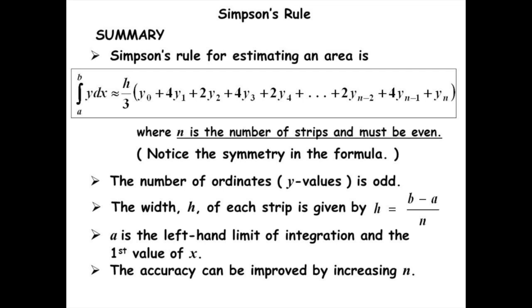Simpson's rule states that sum of first and last ordinates has to be done. Add twice the sum of remaining odd ordinates and four times the sum of remaining even ordinates, multiplied to this total sum by one-third of the common distance between the ordinates, which gives the required area.